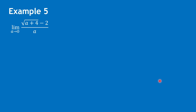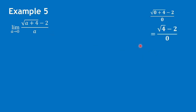For example 5, the limit of the square root of a plus 4 minus 2 over a as a approaches 0. To check if this is really an indeterminate form, let us substitute 0 for a. We have the square root of 4 minus 2 over 0, which gives 0 over 0.